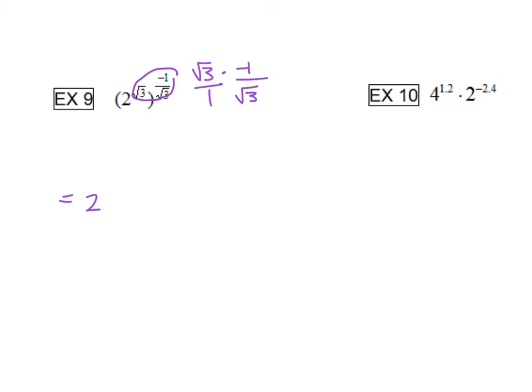If I make that a fraction, now I'm multiplying fractions, the square root of 3s will cancel out leaving us with a negative 1 over 1, which is an exponent of negative 1.